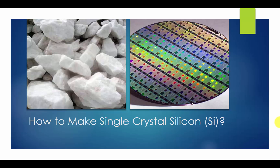Most of today's electronic devices are made with single crystal silicon. But silicon never occurs alone in nature as an element, so how do we make it? Silicon is the second most abundant element in the earth's crust, but it mainly exists as silica, which is impure silicon dioxide, and silicates, which is silicon plus oxygen plus another element.